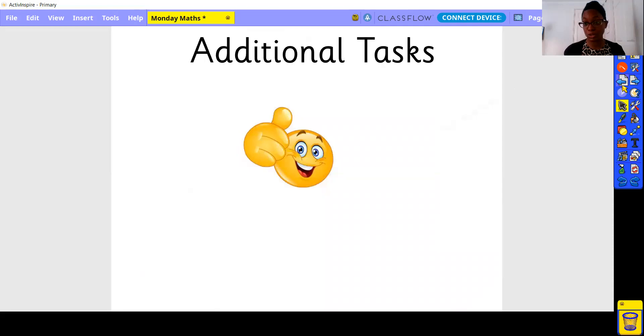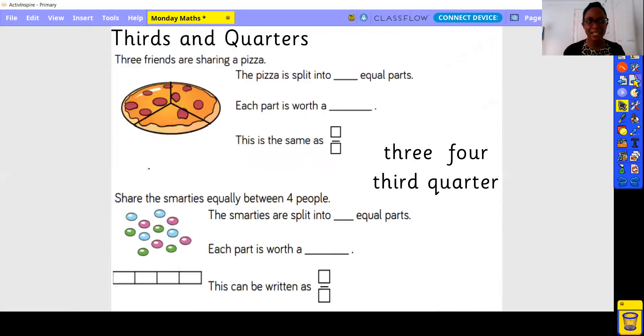Additional tasks if you wish to do so. Feel free to write this underneath your activity with your halves. Three friends are sharing a pizza. The pizza is split into equal parts. Each part is worth, this is the same as, what numbers need to go in here.